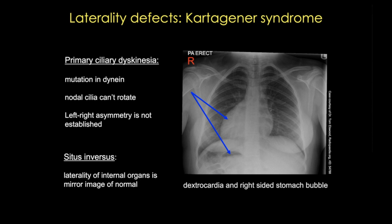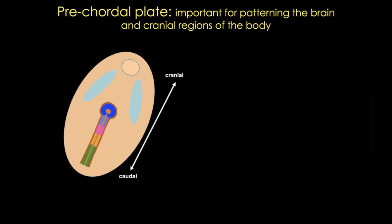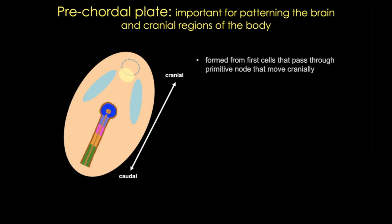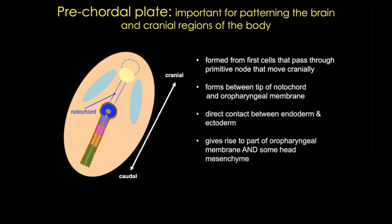Moving on to the organization of the trilaminar embryo: regions of the epiblast have been mapped from animal models — we know where they migrate and their ultimate fates. Starting cranially, cells that ingress through the cranial node region form the pre-cordal plate and the notochord. The pre-cordal plate forms from the very first cells that migrate through the node, moving cranially to the location between the tip of the notochord and the oropharyngeal membrane. Cells from this region contribute to head mesenchyme and it is an important organizer of the head.